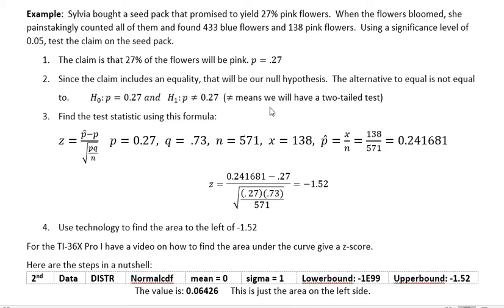And then the p was the given proportion, that was 27% or 0.27. q is just 1 minus 0.27, which is 0.73. The n we already said was 571 and the x was 138. So I just took all those values and put them into that formula and I got a test statistic of negative 1.52.